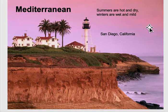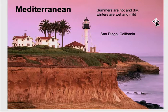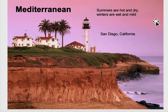Mediterranean climates are where the summers are hot and dry with very little rain, but the winters are wet and mild. California has a Mediterranean climate, as does, of course, much of the area around the Mediterranean Sea.